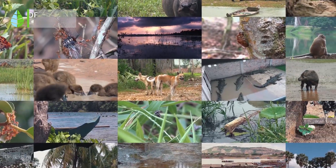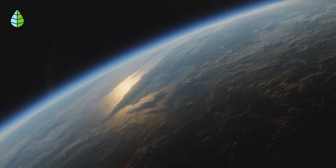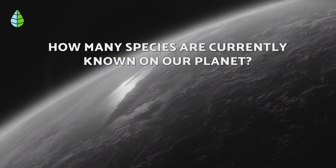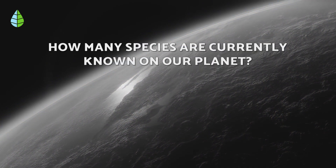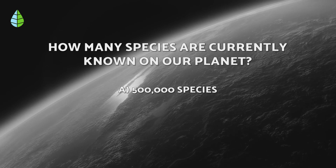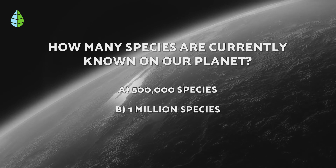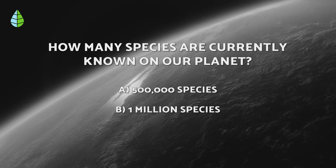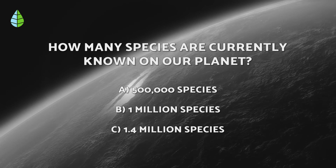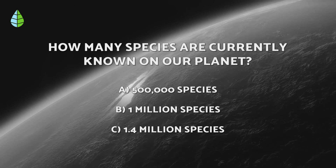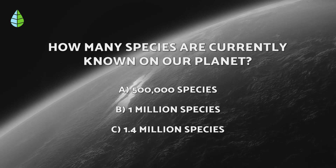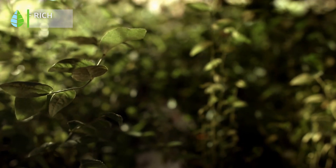But before we continue, let us put you to the test. How many species are currently known on our planet? 500,000 species, 1 million species, or 1.4 million species? Think about it carefully, because at the end of the video you can check if you were right.